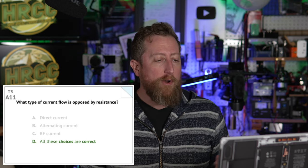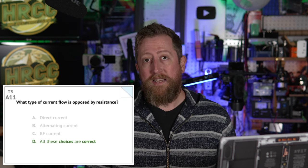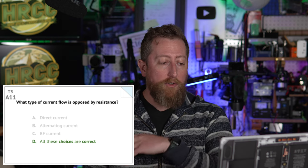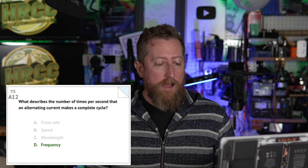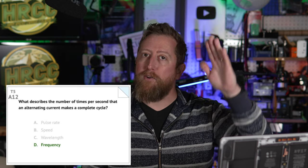Alpha 11: what type of current flow is opposed by resistance? And this is D, all of these choices are correct — A, direct current; B, alternating current; and C, RF current. Alpha 12: what describes the number of times per second that an alternating current makes a complete cycle? The answer is frequency — a complete circuit of switching from positive to negative. So that's section alpha, the baseline of electronics and the measurements and nomenclatures we use.